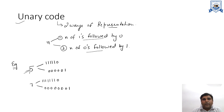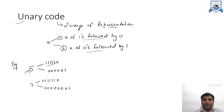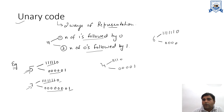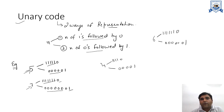For example, if we have the integer 5 and need to find its unary code, we can represent it as 5 ones followed by 0, or 5 zeros followed by 1. Similarly, 7 is represented as 7 ones followed by 0, or 7 zeros followed by 1. The integer 4 becomes 4 ones followed by 0, or 4 zeros followed by 1. In this video, I am taking the representation of n ones followed by 0.